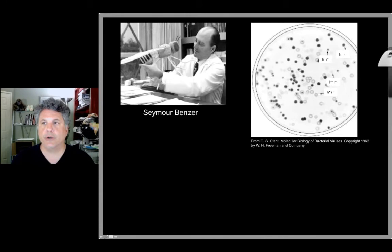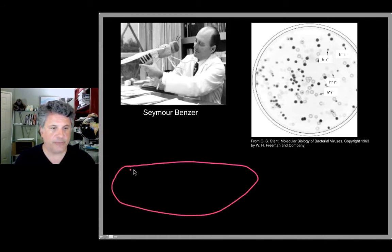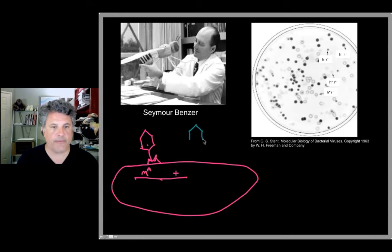What Benzer did first was to utilize the ability to do co-infections of bacteria. We can do co-infections with phage of one genotype injecting its DNA into the host. We'll say the genotype of this phage chromosome when injected is mutant A here, and at a second position it is wild type. Here's another bacteriophage that we can co-infect with and its chromosome is wild type where the other chromosome is mutant for A and it has a mutation in B.